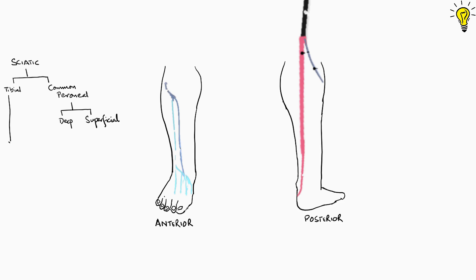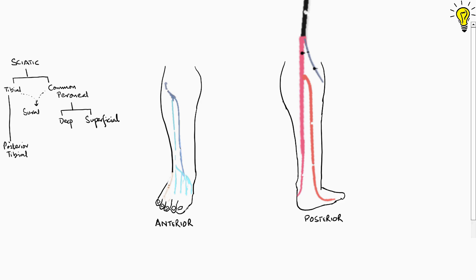The tibial nerve moves downwards posteriorly and gives away the posterior tibial nerve, which further supplies the sole — we will discuss that in the ankle block in another episode. The extensions of the tibial nerve together form the sural nerve, which moves downwards posteriorly and laterally around the ankle, and also supplies the lateral-most small toe area anteriorly as well.